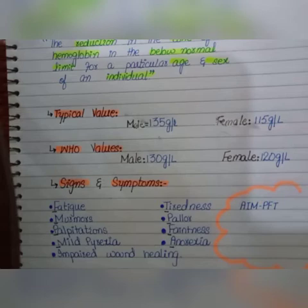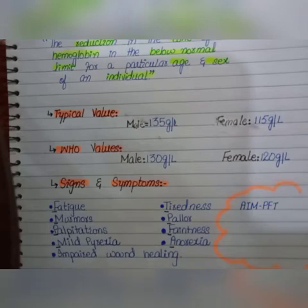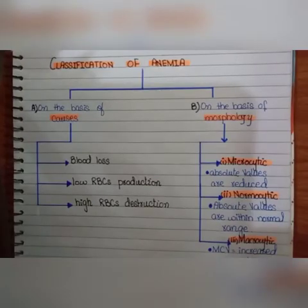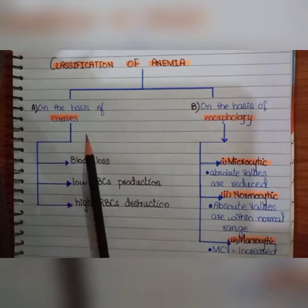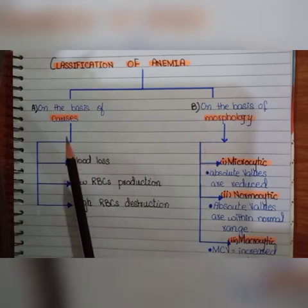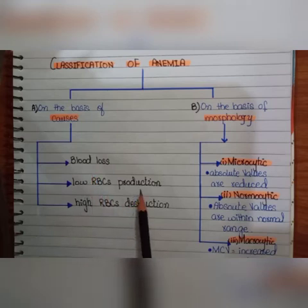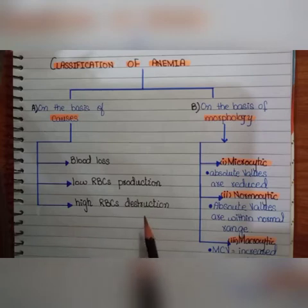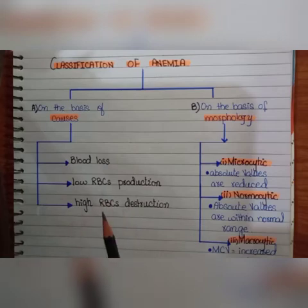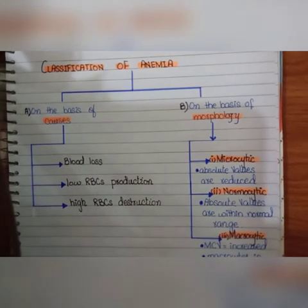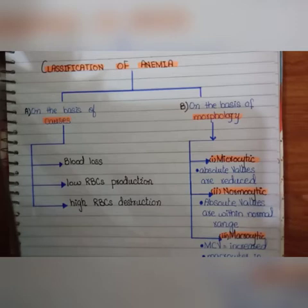Now let's move to the classification of anemia. Anemia can be classified on the basis of two categories: causes and morphology. Based on causes, anemia occurs due to blood loss, low RBC production, or high RBC destruction. Based on morphology, there are three subcategories: microcytic anemia, normocytic anemia, and macrocytic anemia.